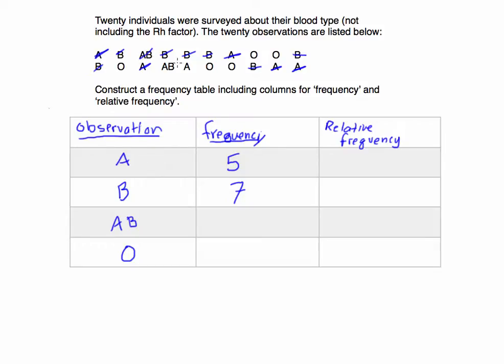seven observations of B. AB appears one, two - two times, and I've already seen I made a mistake here. And O is going to repeat one, two, three, four, five times. So I automatically knew I made a mistake because if you add up these frequencies we don't get 20. I actually missed an A. So instead of having a frequency of five for A, I'm going to have a frequency of six.